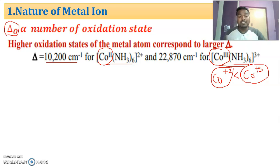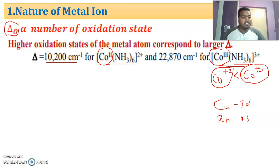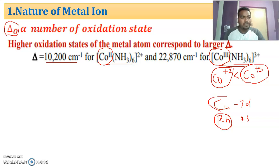But don't confuse this with the case of principal quantum number. In the principal quantum number case, cobalt is a 3d series element and rhodium is a 4d series element. The size of cobalt is small, but the size of rhodium is high. Even though the size of rhodium is high, the attraction of electrons is less in the case of rhodium, but the interaction is more.